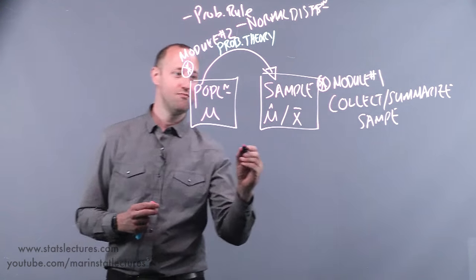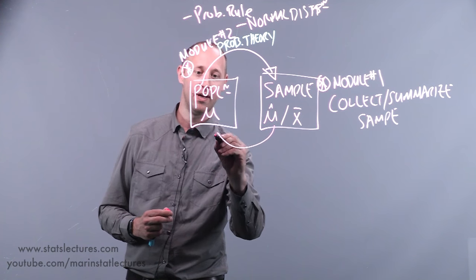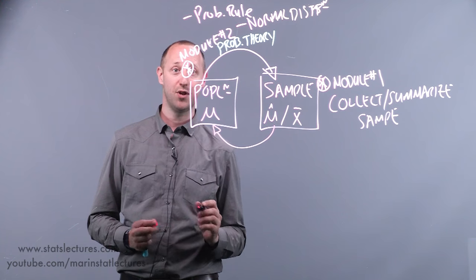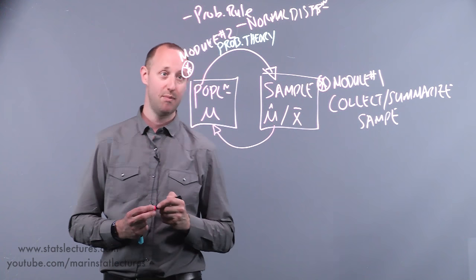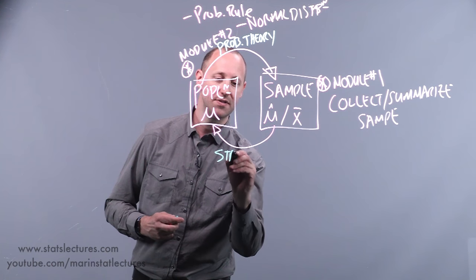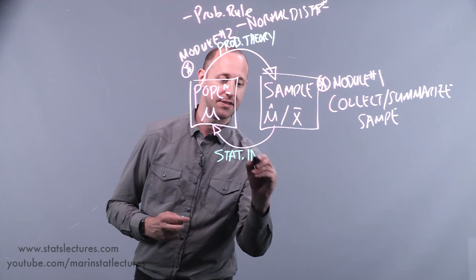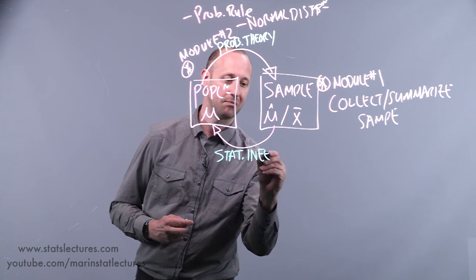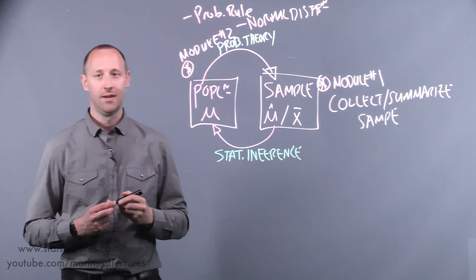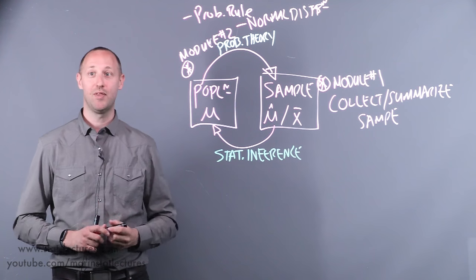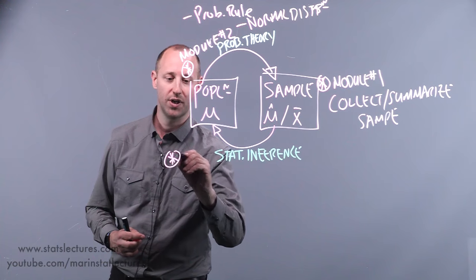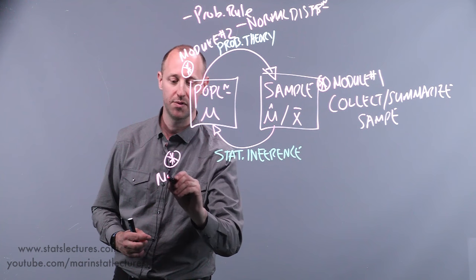This is not actually statistics yet. Statistics is where we learn to reverse the direction of that arrow and say: given our sample, what do we think the truth may be for the population? What statements can we make about the population? This gets called statistical inference, and it's what most people think of as statistics. In our course, we're going to cover this in module three.